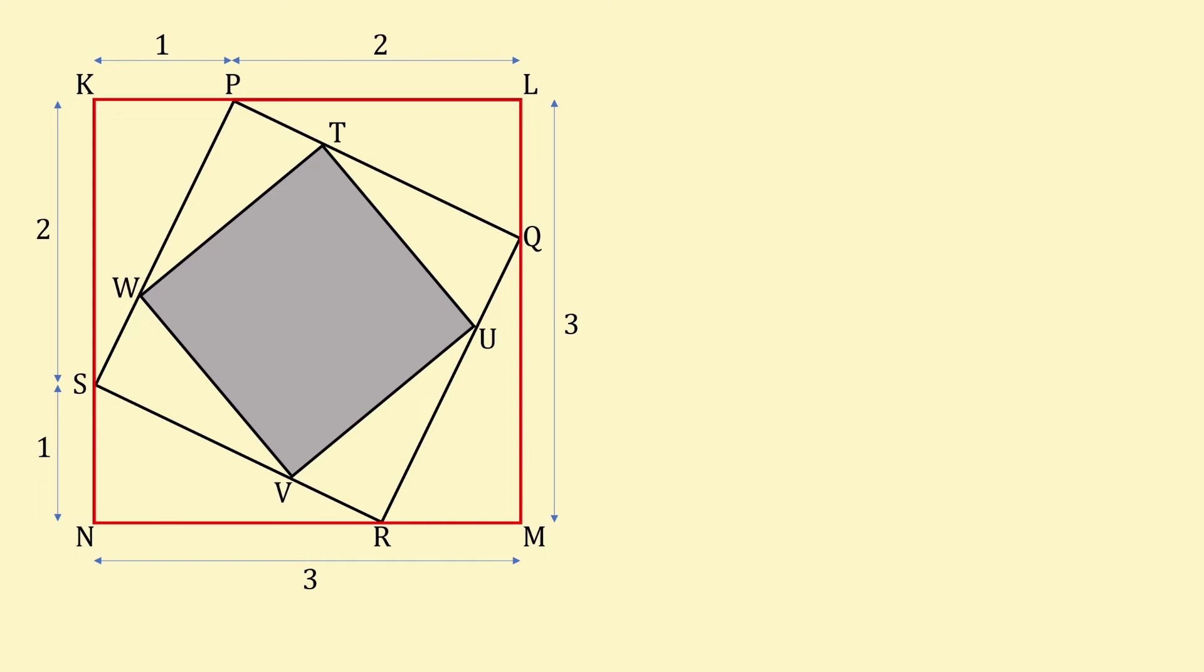As each side of the largest square is 3, the area of square KLMN is 3 squared, which is 9.